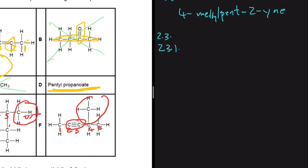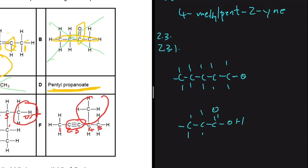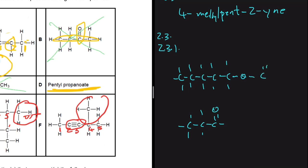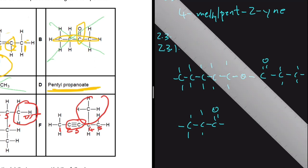'Pent' means five carbons, so the alcohol part gives a chain of five carbons (1–2–3–4–5). In the alcohol, there was an –OH group, but when forming the ester it loses the hydrogen. 'Propanoate' comes from propanoic acid (three carbons), which loses its –OH when forming the ester. The byproduct is H₂O. In the structural formula, we connect the pentyl chain via an oxygen to the carbonyl carbon of the propanoyl group, filling remaining bonds with hydrogens.